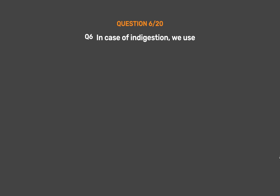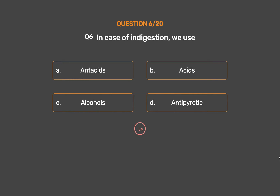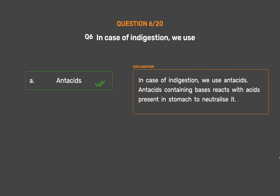Question number 6. In case of indigestion, we use — Option A: Antacids. Option B: Acids. Option C: Alcohols. Option D: Antipyretic. The correct answer is Option A: Antacids. In case of indigestion, we use antacids. Antacids containing bases react with acids present in the stomach to neutralize it.